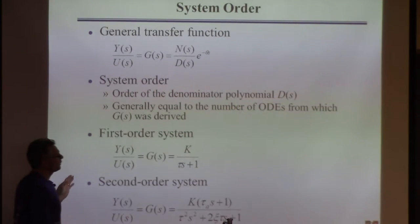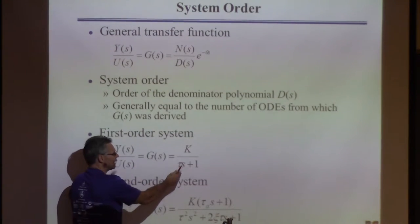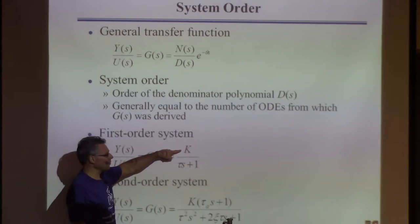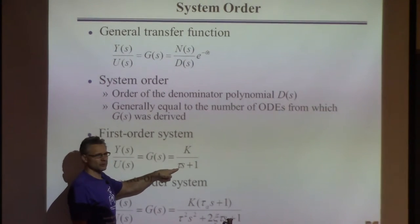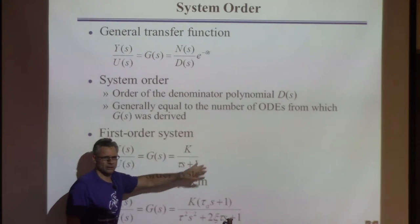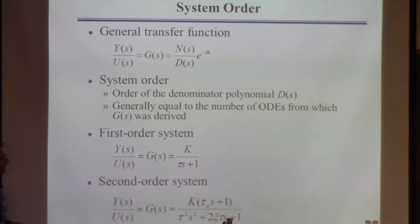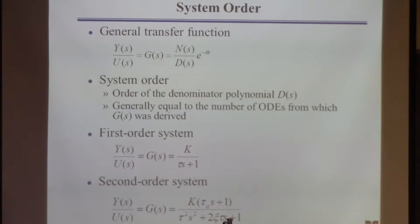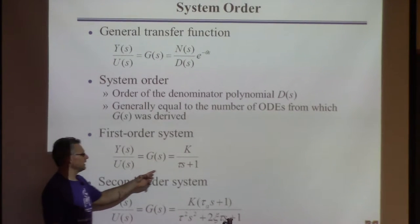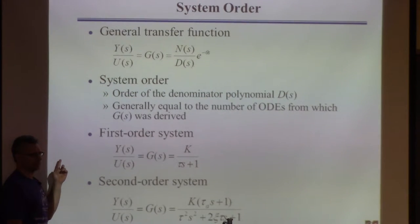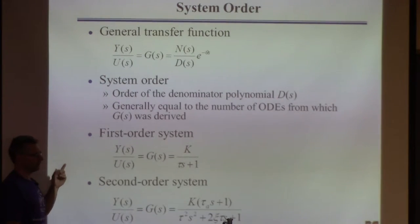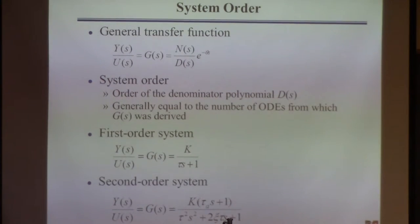A first-order system has no power of s in the numerator — just a number K. The denominator is first-order in s, and there's no time delay. That's as simple as it gets. You get a transfer function like this if you derived it from a single first-order differential equation.